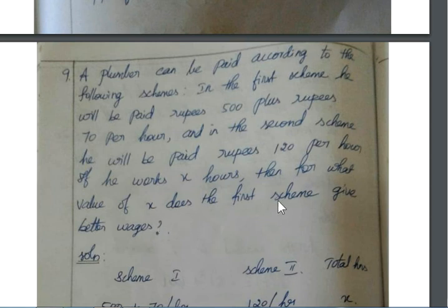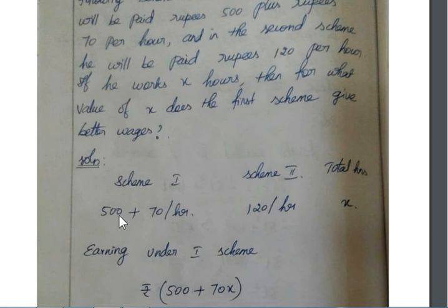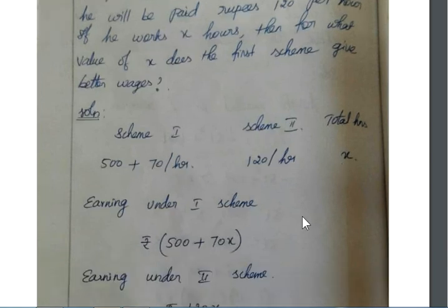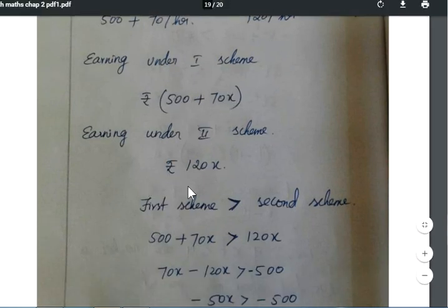If he works x hours, then for what value of x does the first scheme give better wages? There are two schemes: 500 plus 70 per hour, and 120 per hour. Total hours is x. So earnings under the first scheme is 500 plus 70x, and the second scheme is 120x.